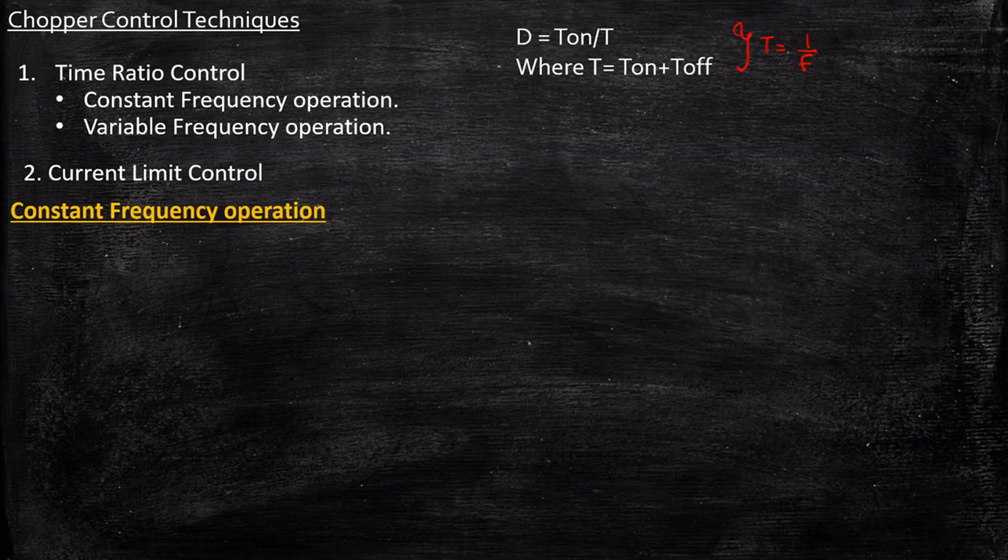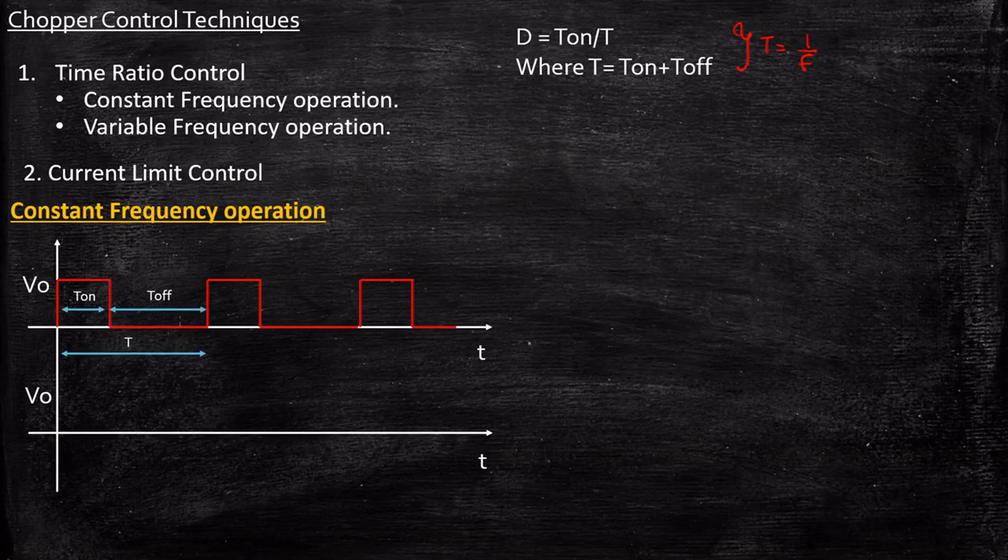Now let's consider constant frequency operation and see what happens. Let us consider an output voltage waveform from a chopper circuit. This is the time at which the chopper is on, this is the time at which it is off, and this is the total time period T. If we have to achieve constant frequency operation, we must not change the value of T. T should be constant because F is inversely proportional to T. Constant frequency also means constant time period.